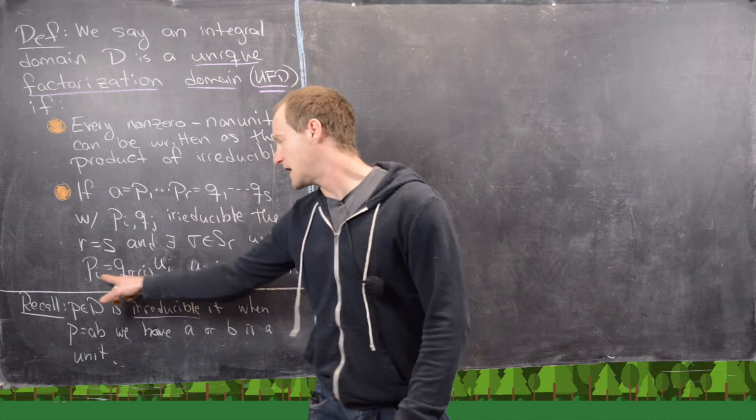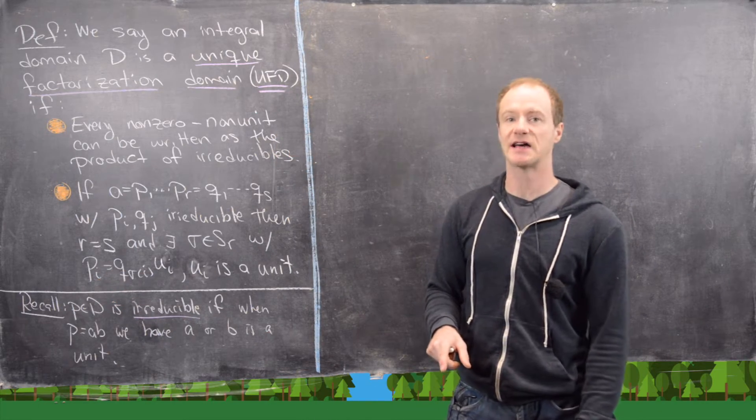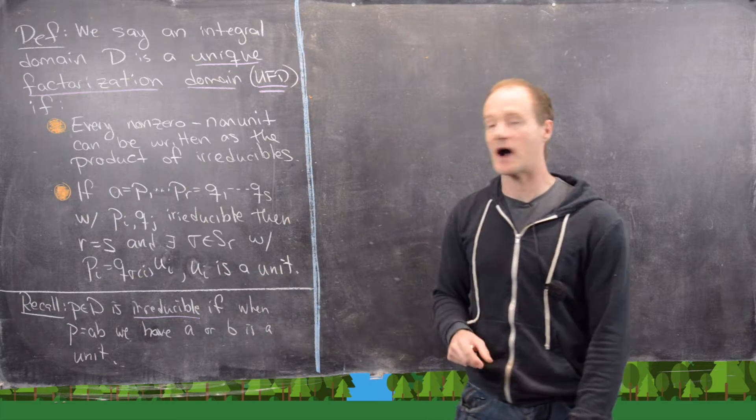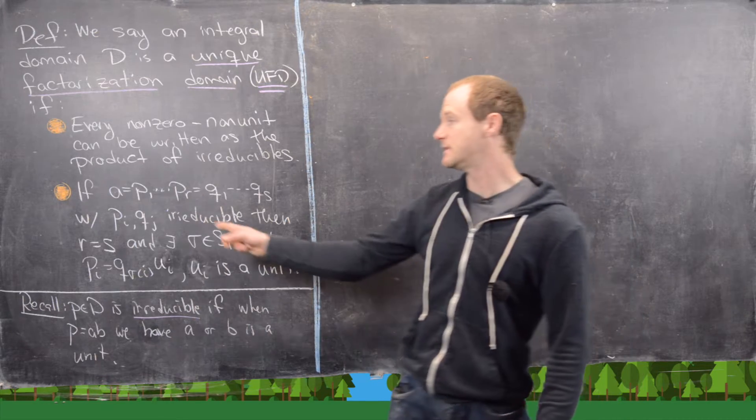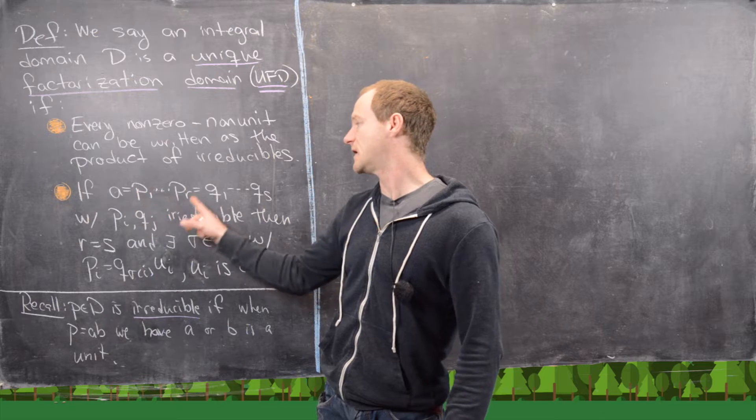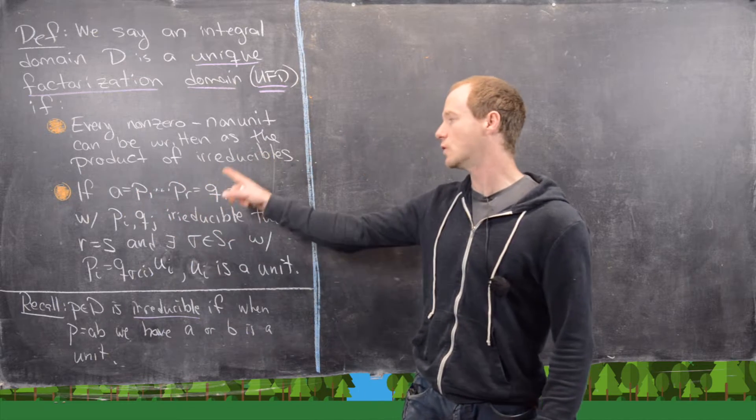With PI equals Q sigma I times UI, where UI is a unit. So what this means is that this list P1 to PR and this list Q1 to QR.